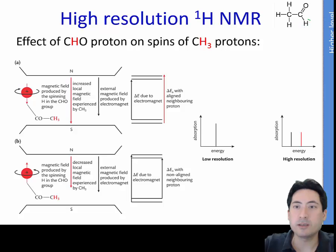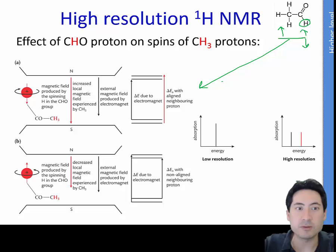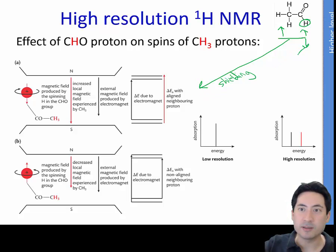We're going to look at an example with ethanol and examine the effect of a neighboring proton spinning either up or down, assuming all these hydrogens in this environment are spinning up. When both are spinning up, that's called shielding, and shielding allows a greater energy release — that's called a movement downfield — creating a greater amount of magnetic field energy.